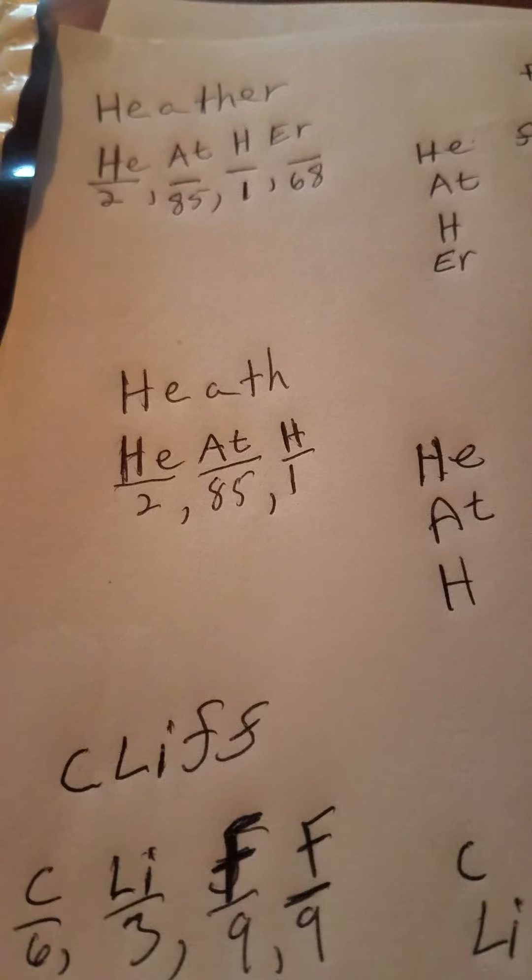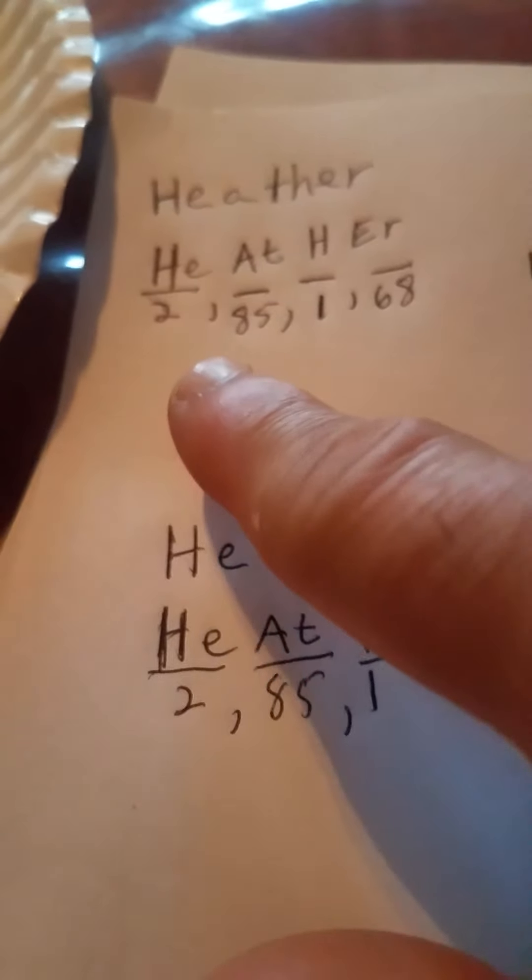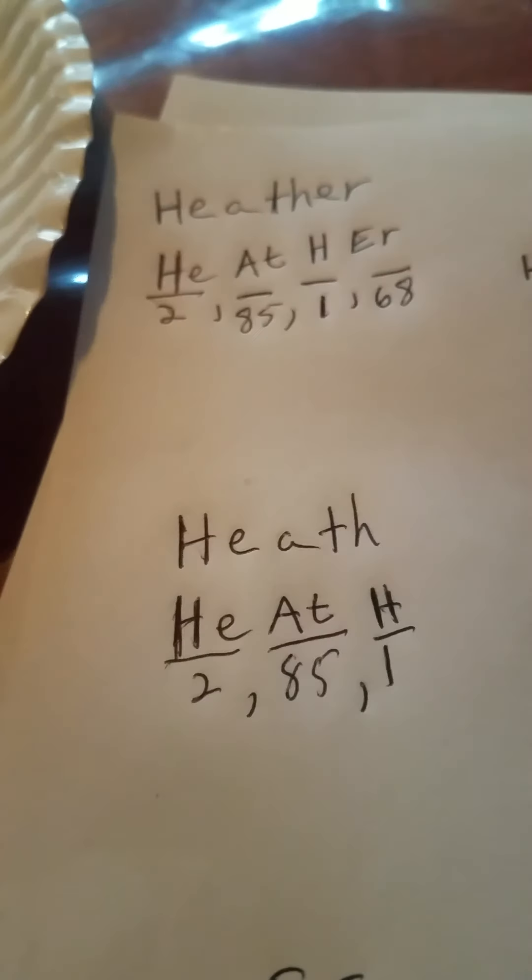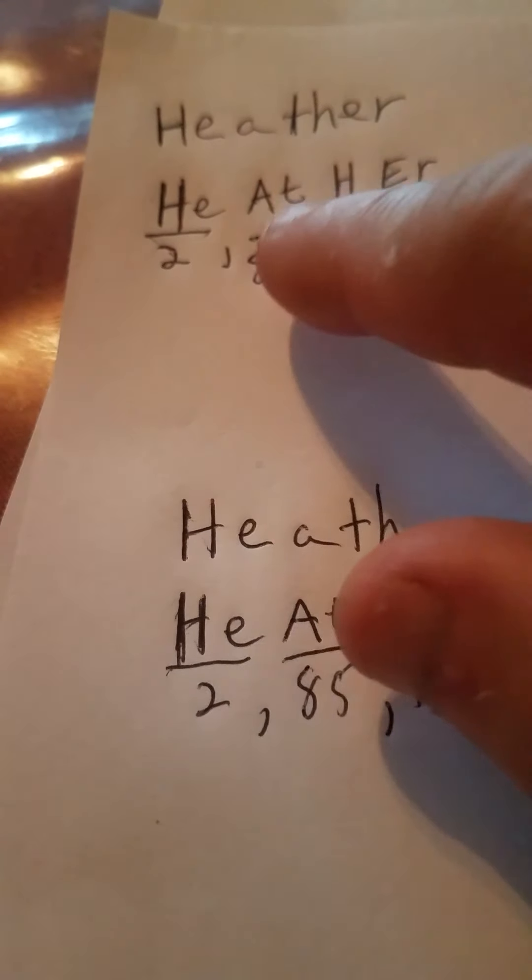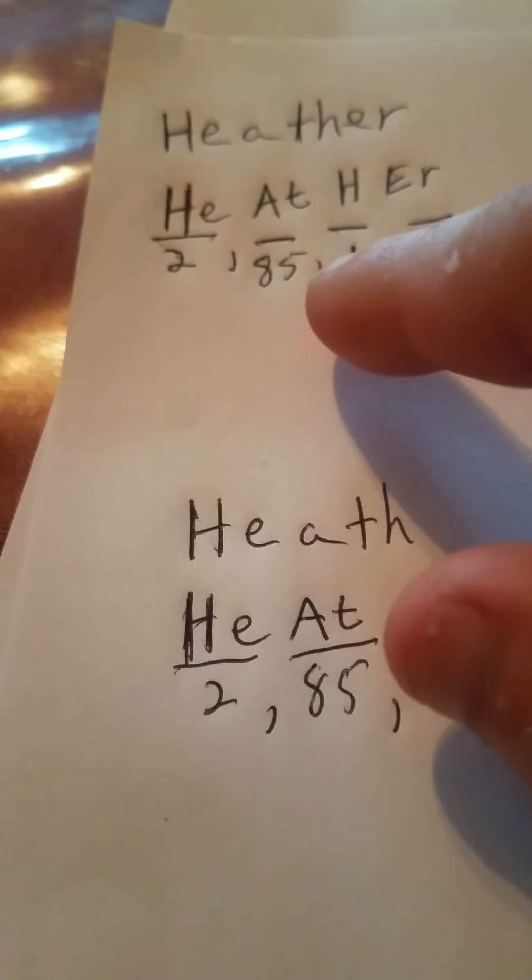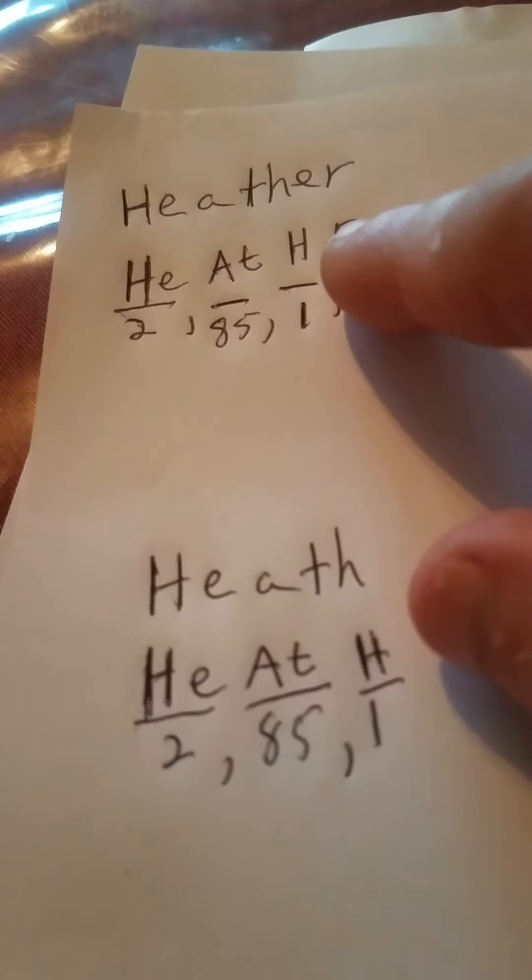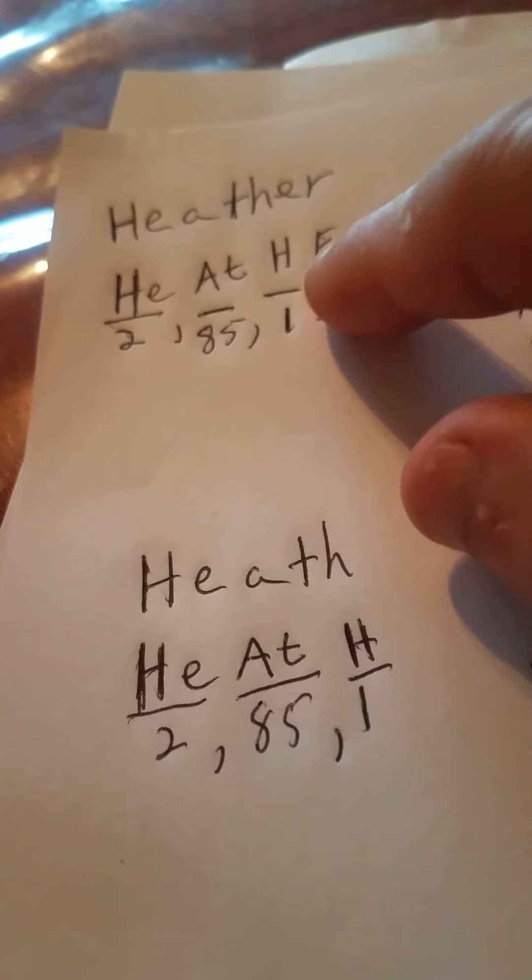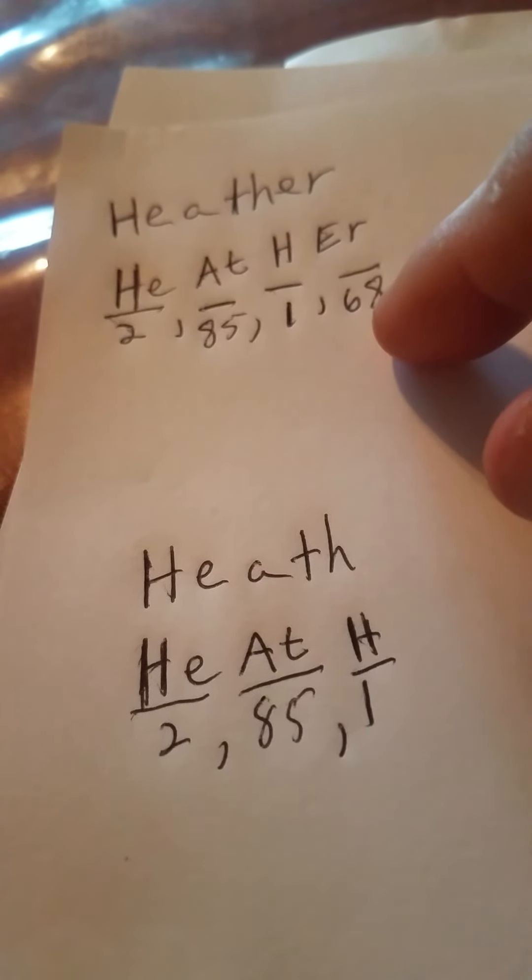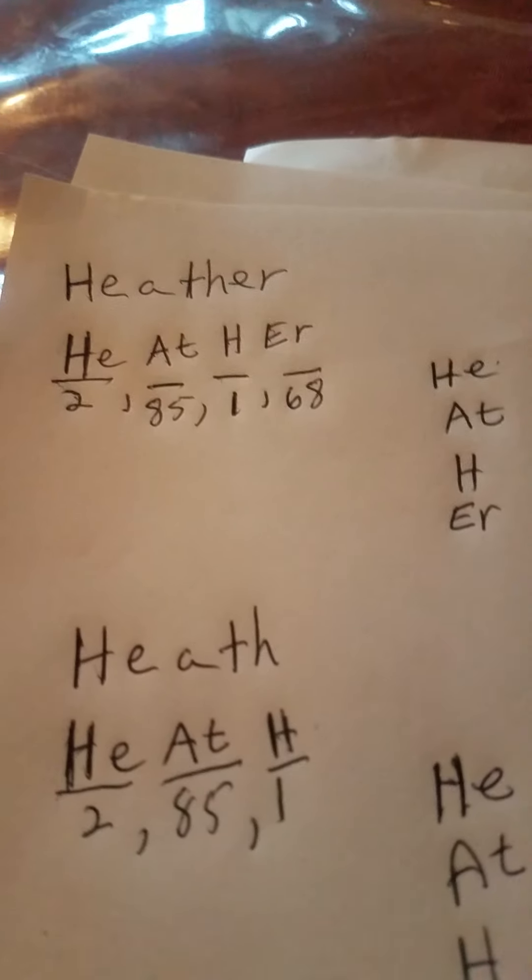Go to the description box below for everything. I got Heather. This name is Heather. H-E-A-T-H-E-R. H, capital H and small e for helium, which is atomic number two. I got capital A and a small t for astatine, which is 85 atomic number. And I got capital H, one atomic number for hydrogen. And I got capital E-R, 68 atomic number for erbium. Erbium is spelled capital E-R-B-I-U-M, which I will put down in the description box below.